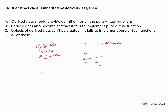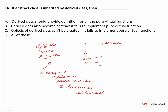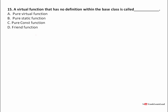The answer is D — all of these are true: the derived class should provide definitions for all pure virtual functions; the derived class also becomes abstract if it fails to implement the pure virtual function; and objects of the derived class cannot be created if it fails to implement the pure virtual function. A virtual function that has no definition within a base class is called a pure virtual function.